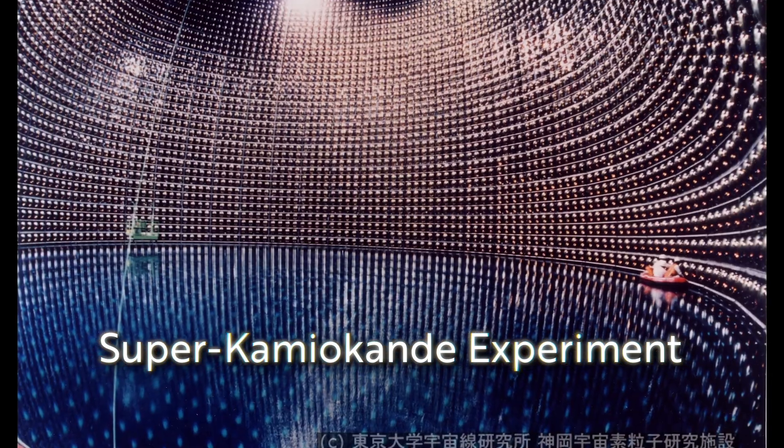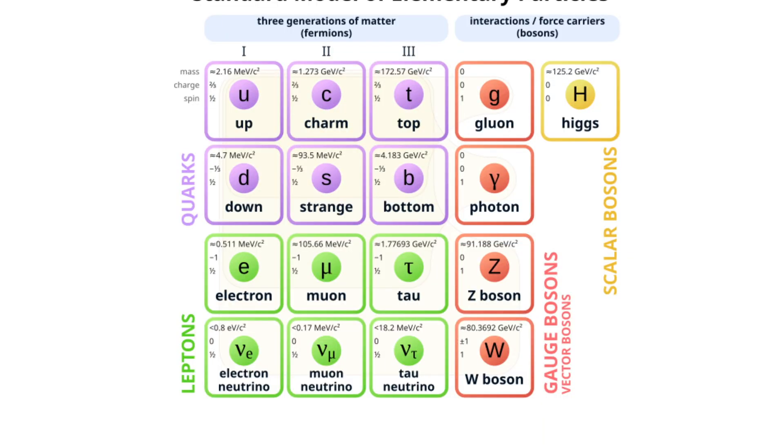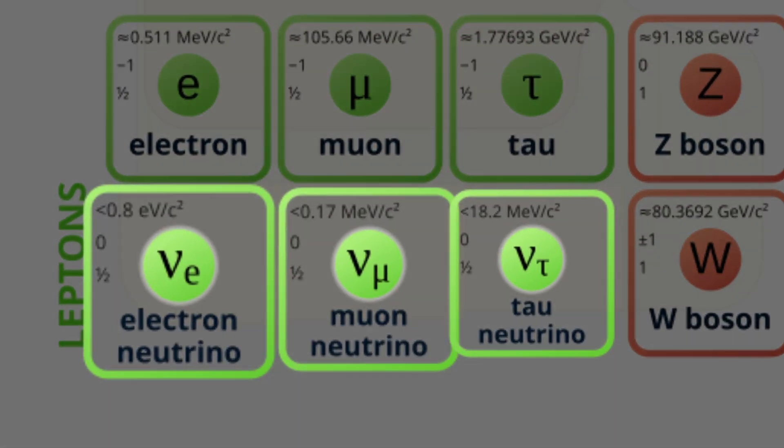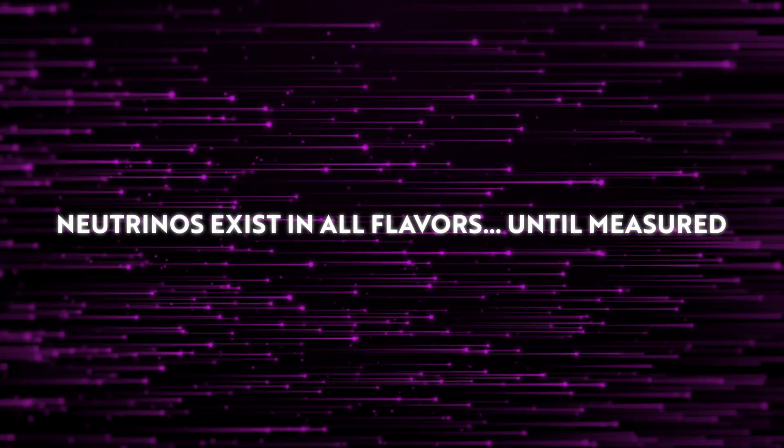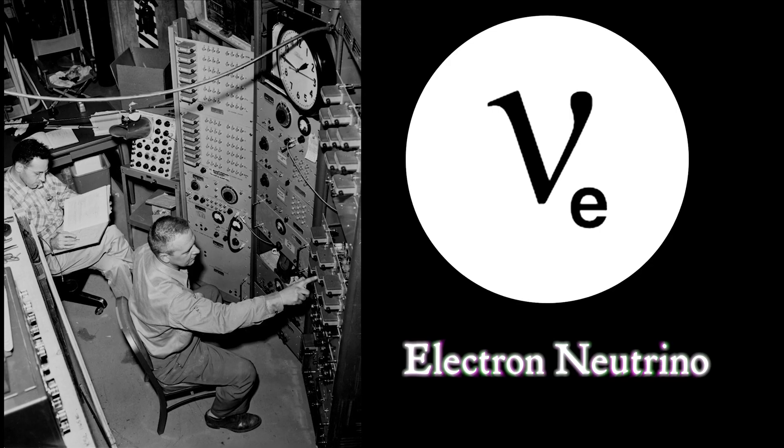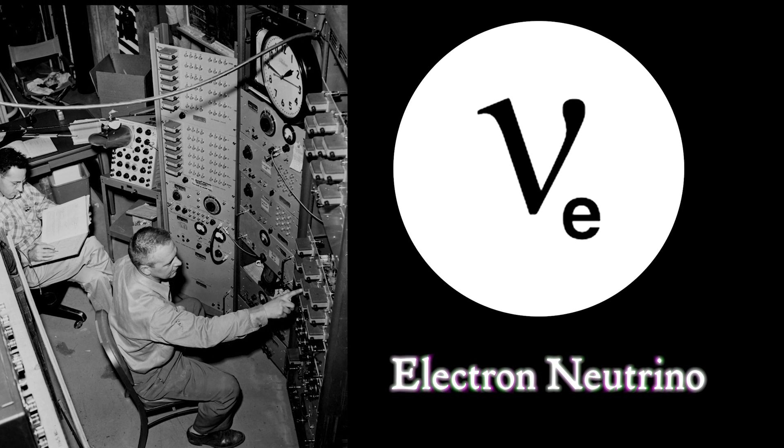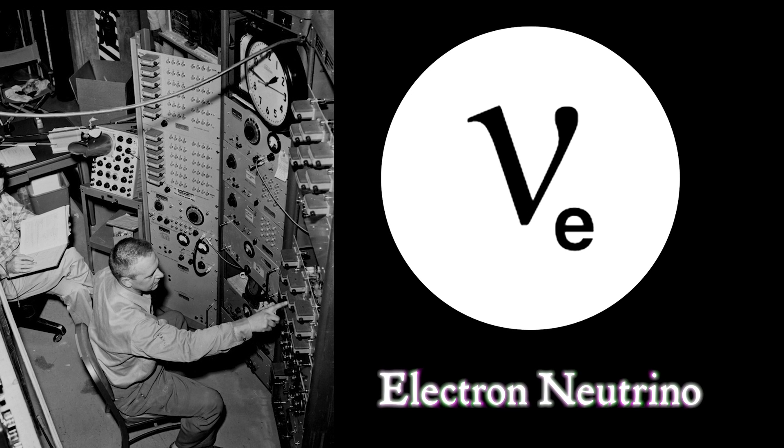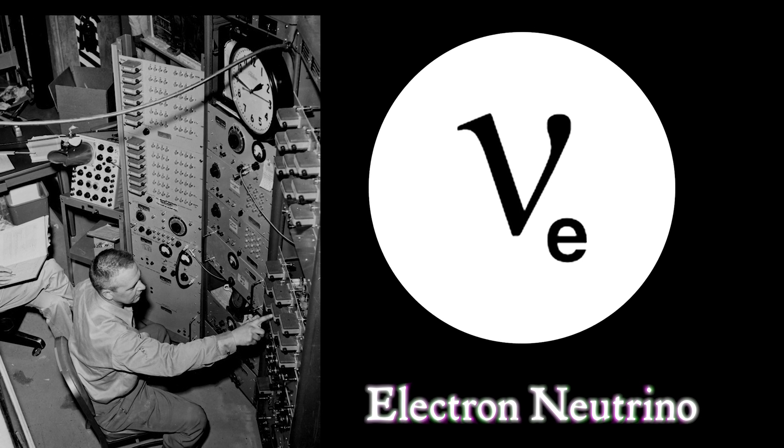Over time, the scientists found out that neutrinos come in different variations, known as flavors. There are three flavors: electron, muon, and tau flavors. Technically, all neutrinos exist in a state of superposition until they are observed, like trillions of subatomic Schrodinger's cats zipping around the universe. Electron neutrinos were the first observed variation, as seen by Cowan and Reines when measuring next to their nuclear reactors.